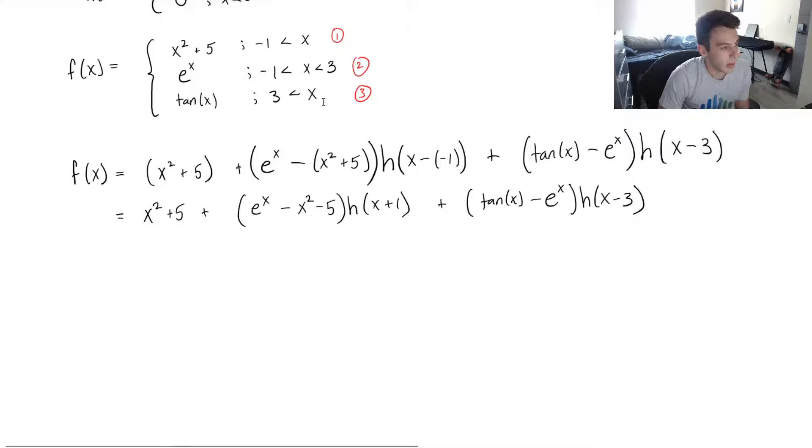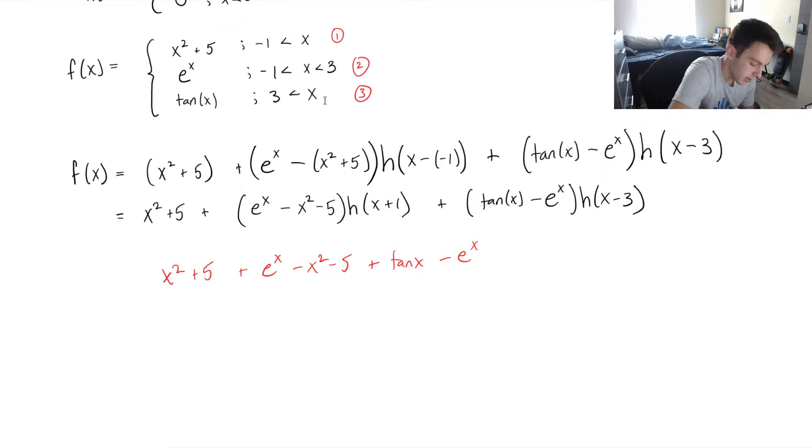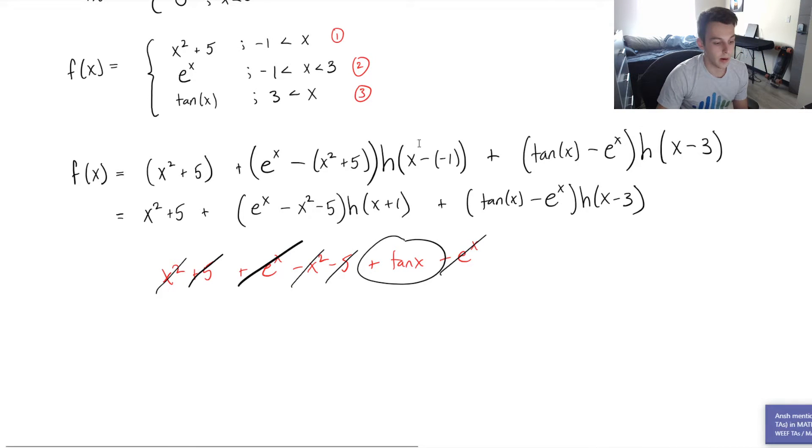Okay, so finally, same logic with the last one. So when x is greater than three, let's pick like ten. So h of ten plus one, that's going to be positive, and then ten minus three is also going to be positive. So all of my terms are still going to exist. So I've got x squared plus five plus e to the x minus x squared minus five plus tan of x minus e to the x. And you guys can already see my x squared and my fives cancel, my e to the x cancels, and I'm left with what I want.